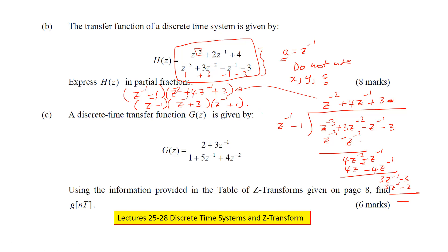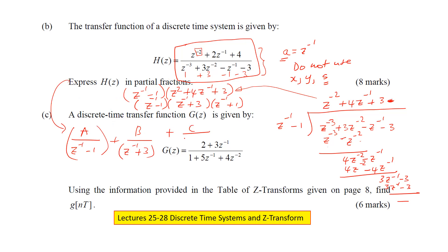You then factorize it. The question is asking for partial fractions. Since you have A equal to Z to the minus one, it's going to be A over Z to the minus one minus one, plus B over Z to the minus one plus three, plus C over Z to the minus one plus one. Then you solve for A, B, and C as you are accustomed to doing. And that's the answer.